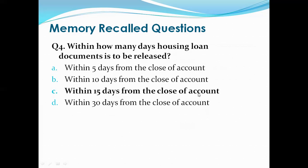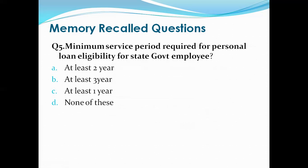Question 5: What is the minimum service period required for personal loan eligibility for a state government employee? Options are: at least two years, at least three years, at least one year, none of these. The right answer is C, that is at least one year. So at least one year of service is required for a state government employee applicant seeking a personal loan.